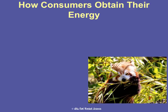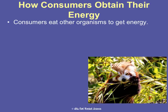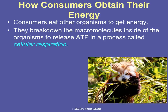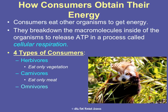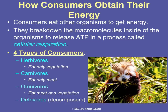So how do consumers get their energy if we can't make it? We eat other organisms to get energy, then break down the macromolecules we eat and release ATP from them to be used by our cells — that happens during cellular respiration, which we'll cover in detail in Concept 5. There are four types of consumers: herbivores eat only vegetation, carnivores eat only meat, omnivores eat both, and detritivores, decomposers, or scavengers eat dead or decaying materials.